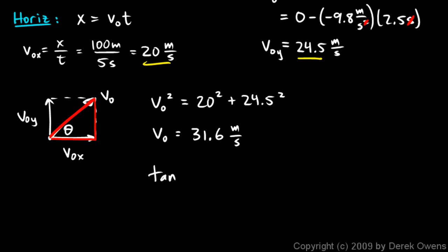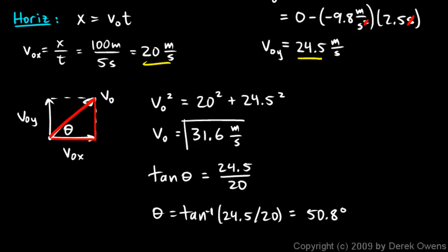And then the angle, you should be able to see that the tangent of theta, tangent is always opposite over adjacent, so that's going to be v0y, that's the side opposite theta, over v0x. So tangent of theta is going to be 24.5 over 20. So theta is the inverse tangent of 24.5 over 20. And you pull out your calculator, and if it's set in degree mode, when you type that in, you get an answer of 50.8 degrees. So this is your answer: 31.6 meters per second at an angle of 50.8 degrees above the horizontal.